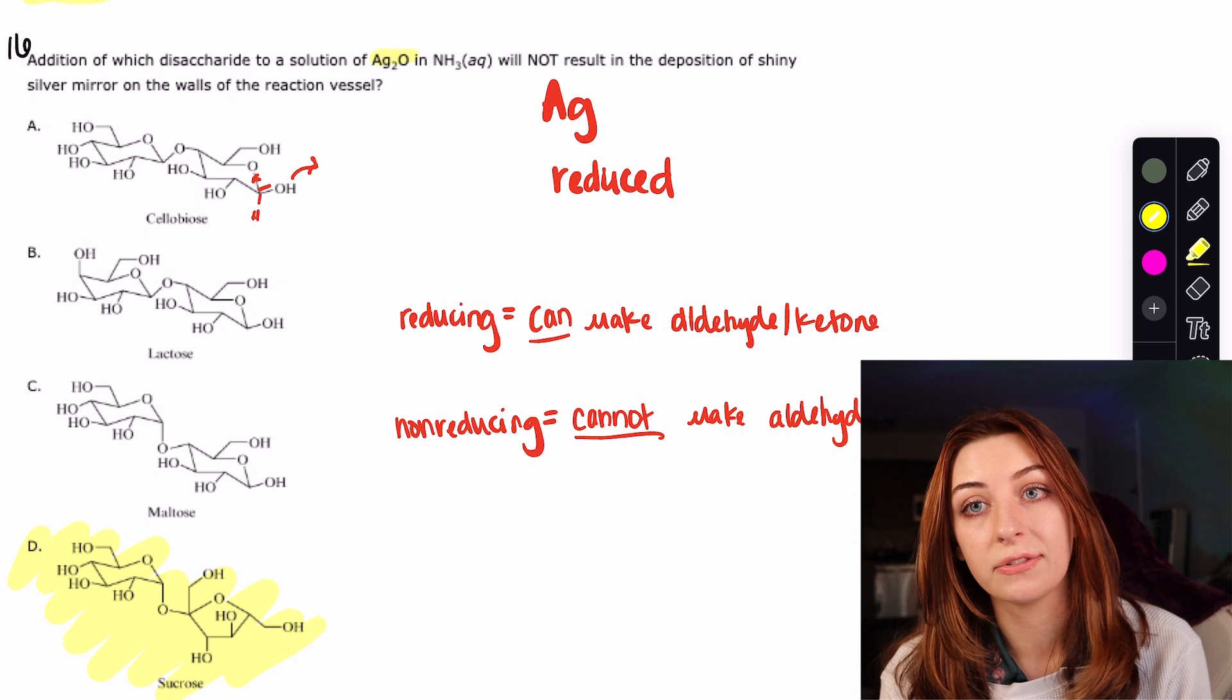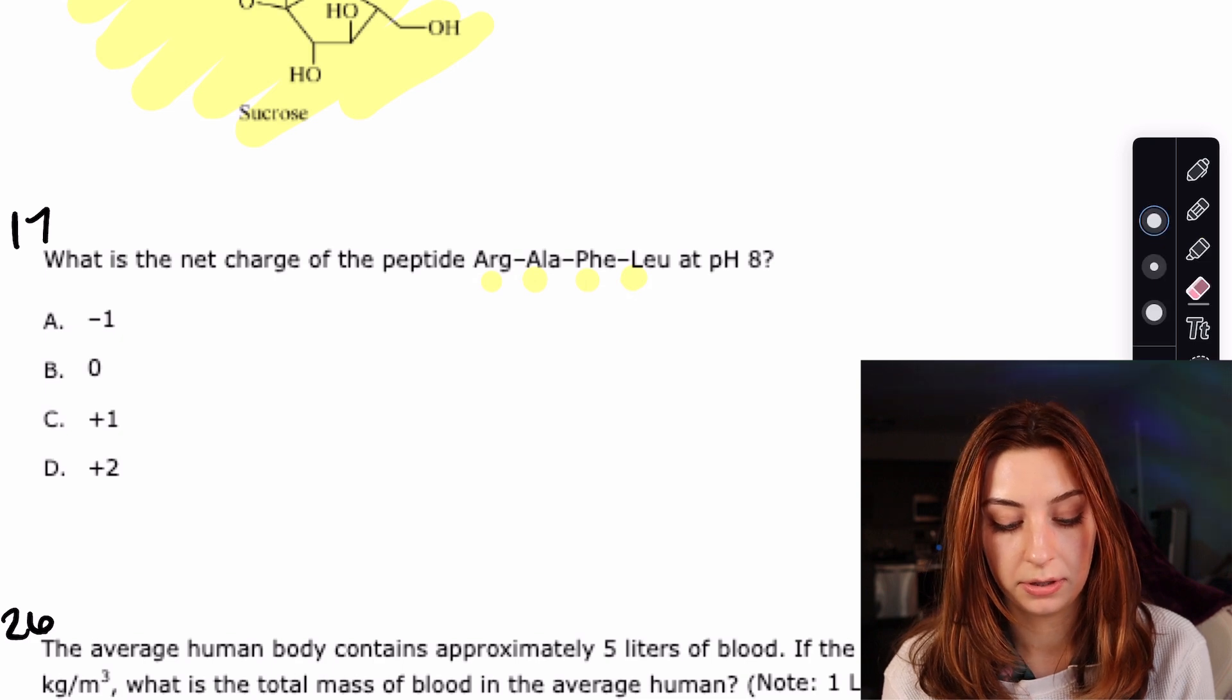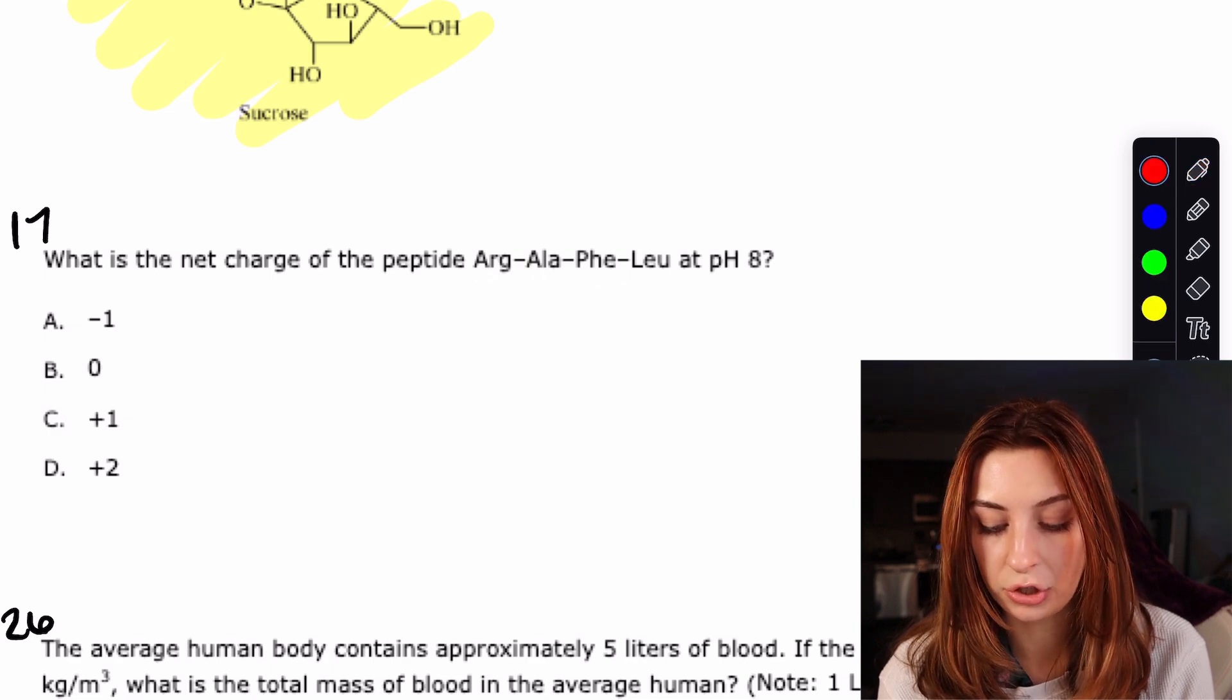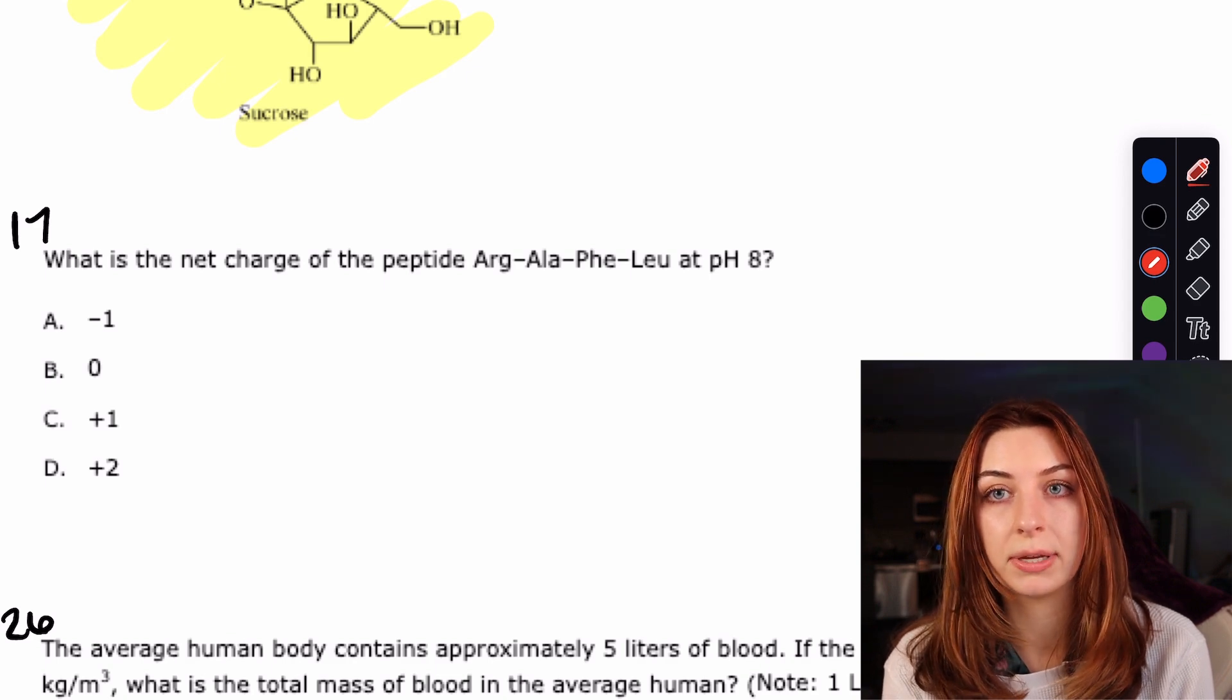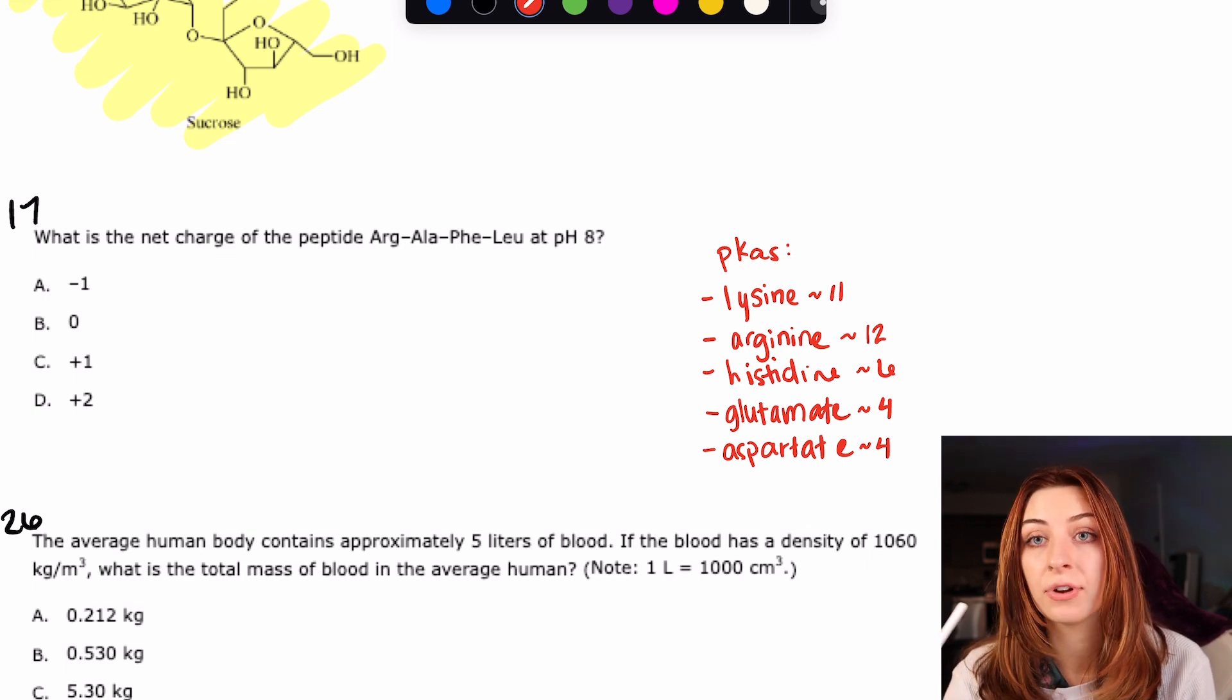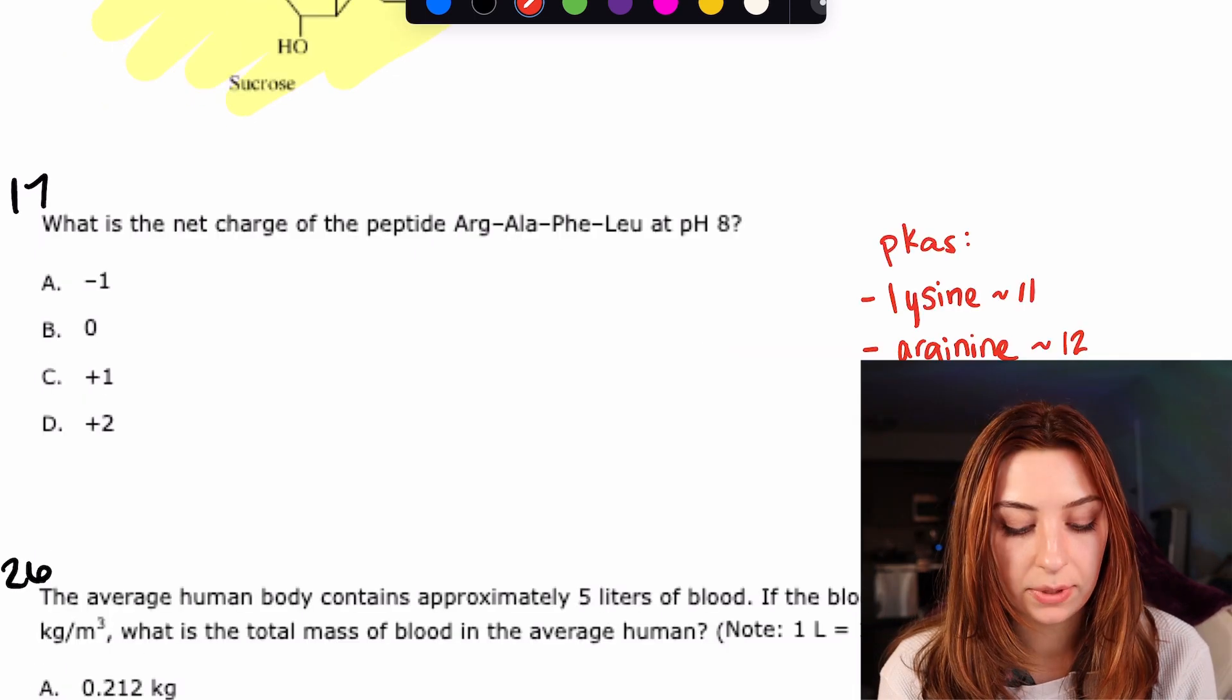Question 17 says what is the net charge of the peptide, and they give you amino acids in a row, a little oligopeptide, at a pH of 8. So this is just asking do you know the pKa's of these amino acids. Do you know what charge they're going to have at a pH of 8, which is basically just saying do you know the pKa's. If you don't know the pKa's you are in luck. I've just written them down right there. But put these in your mind. Like if you've ever heard me speak you know I'm talking about how high yield amino acids are on the MCAT. So please know these pKa's. This is going to be so useful.